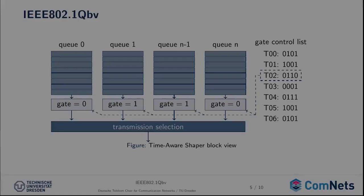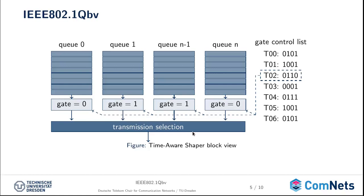Let's have a closer view on the time-aware shaper functionality. You see the block view of each output port of a time-sensitive network device — basically a number of queues, and at the end of each queue there is a gate. This gate can be either closed (zero) or open (one). If the gate is open, the packets stored in the queue are transmitted to the output port. The queues have different priorities — queue number seven has the highest priority. What is also important is the gate control list, which controls the state of the gates of all queues. The gate control list is basically a list of time values representing the valid time of each entry and a binary mask.